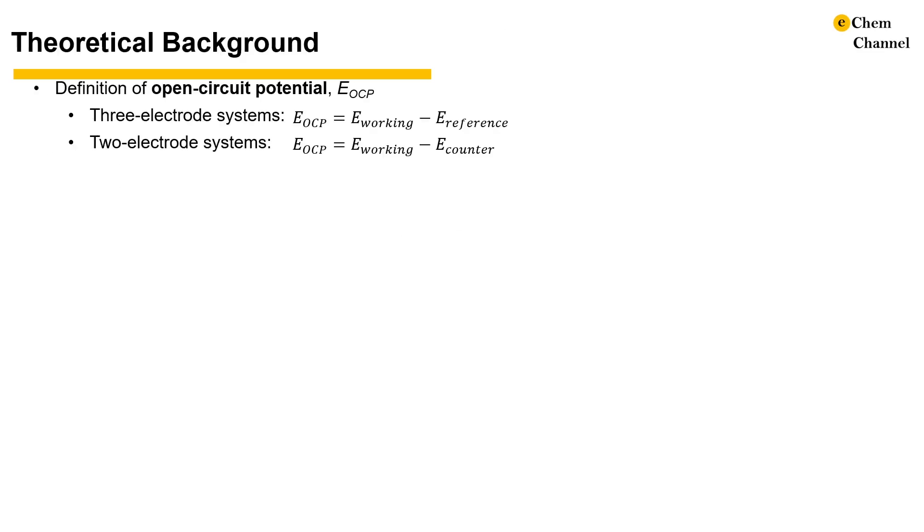In OCP measurement, no current is supplied. Only the open circuit potential is measured between the working electrode and the reference electrode for three-electrode systems, and between the working electrode and the counter electrode for two-electrode systems.